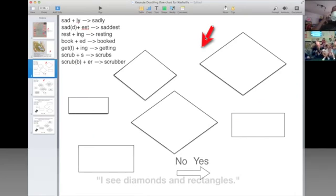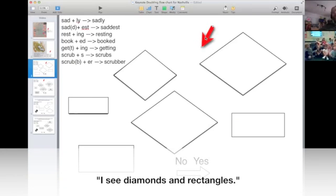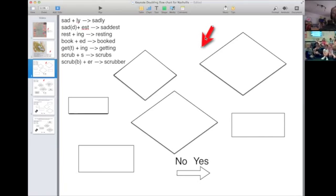Now what kind of shapes do we have? Excellent, we have diamonds and we have rectangles. Now this is something that's good to know that is true of every flowchart. Flowcharts are something that are used in all sorts of areas of science, we're just using it in spelling science. If it's a real flowchart it always uses the same convention: diamond shapes are decision boxes, rectangles are action boxes. So when you see a diamond shape you know you're going to ask a question, and when you see a rectangle you know you're going to be told to do something.